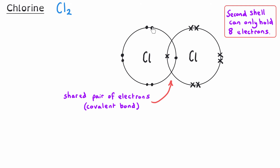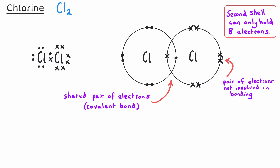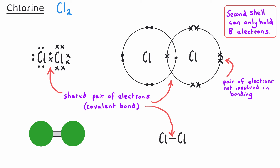The shared pair of electrons forms the covalent bond, but there are also three pairs of electrons on each chlorine atom that are not involved in bonding — these must definitely be shown. The simpler dot and cross diagram looks very similar but takes up less space, still showing the shared pair and the three non-bonding pairs without drawing the electron shells. The displayed formula shows two chlorine atoms with a single line between them, and the ball and stick diagram uses two green atoms connected by one bond.